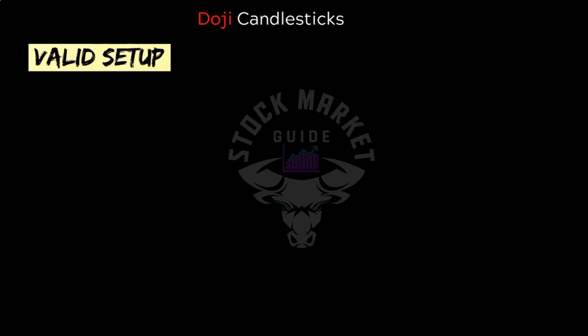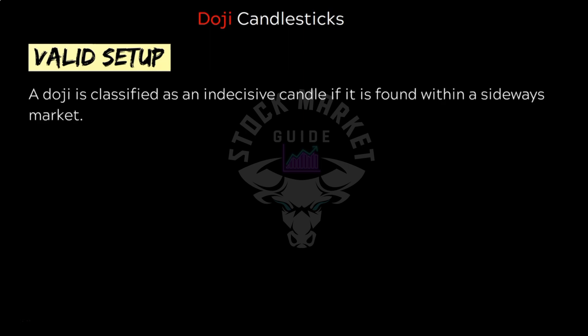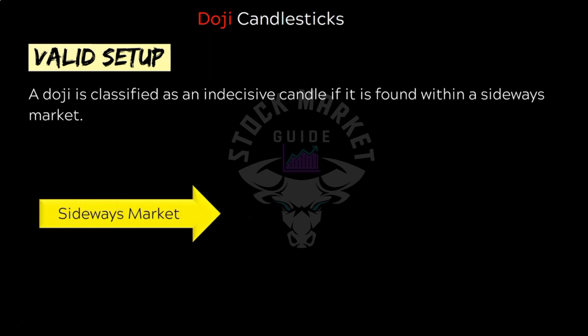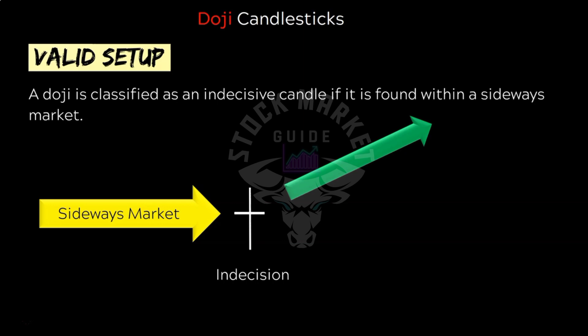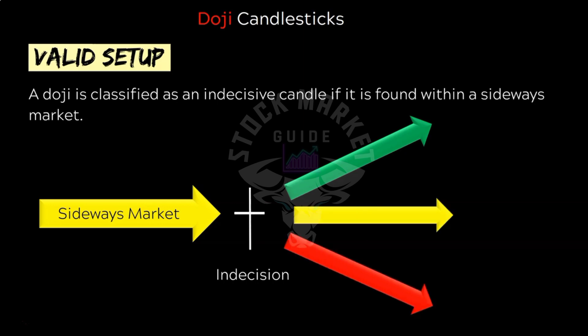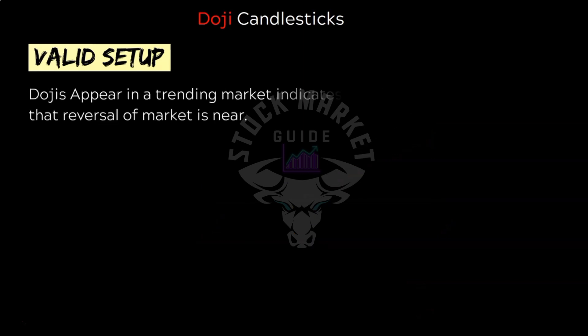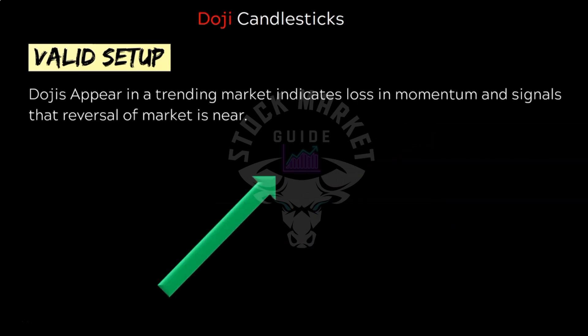This long or short wicks you have to observe with context of recent price action. A doji is classified as an indecisive candle if found within a sideways market, and its formation there is of least importance since the market can follow any direction. But dojis are considered very important if found in a trending market — they indicate loss in momentum and signal that a reversal is near.